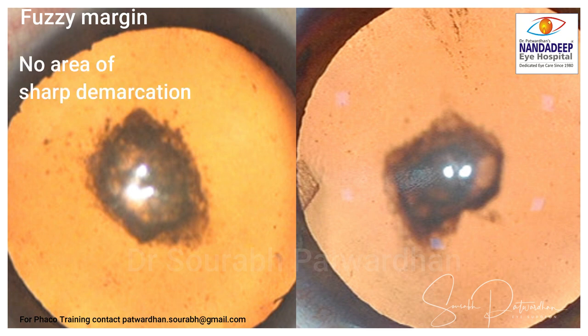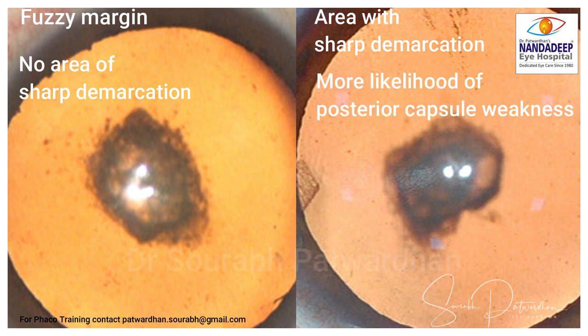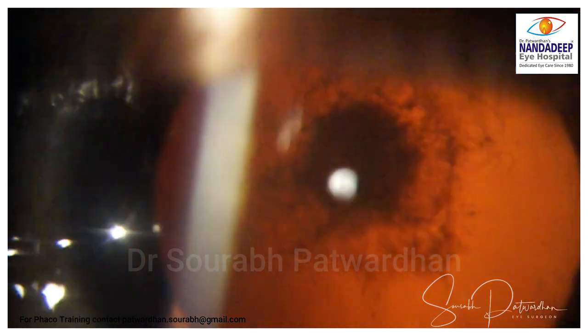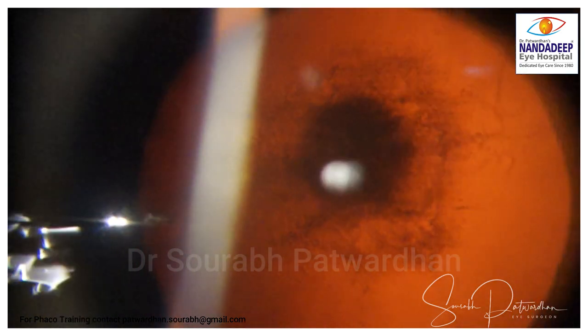When you see under the surgical microscope, fuzzy margins with no areas of sharp demarcation indicate a classical posterior subcapsular cataract. But whenever there is an area of sharp demarcation, there is a higher likelihood that the posterior capsule may be weak in that area, though of course many cases go uneventful. A classical posterior polar cataract has a plaque with a defined margin present since young age. The Sinc classification describes: opacity associated with PSC, opacity with ring or onion peel appearance, and opacity with dense white spots — also called the Delgis Sinc sign — which can be associated with nucleus prolapse.